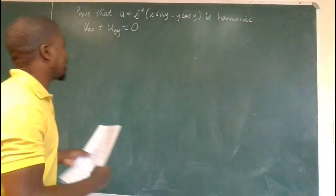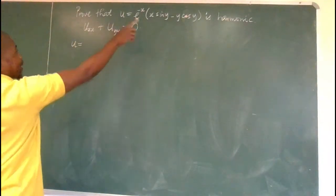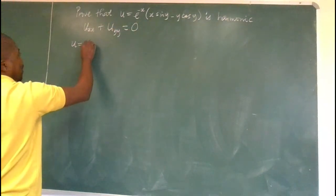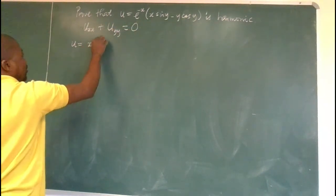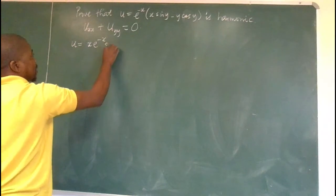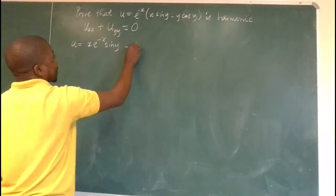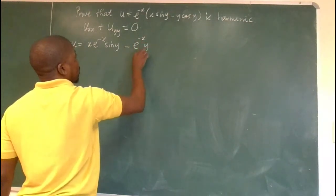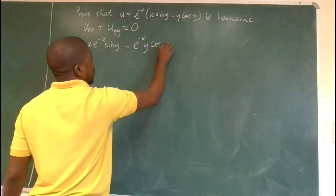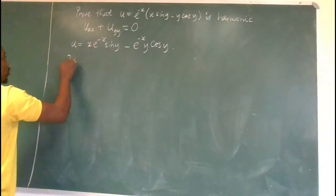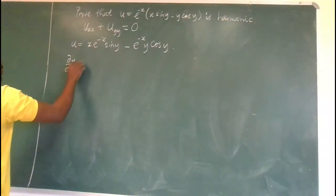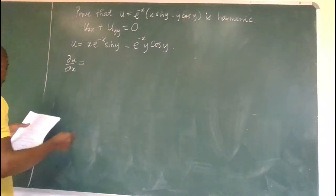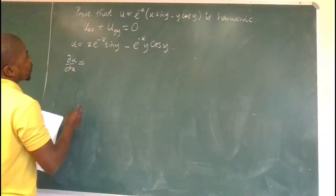Let's remove the brackets and clearly see our u. If we remove brackets, we have x times e to the minus x times sine y, minus e to the power minus x times y cos y. Now let's find the partial derivative of u with respect to x.